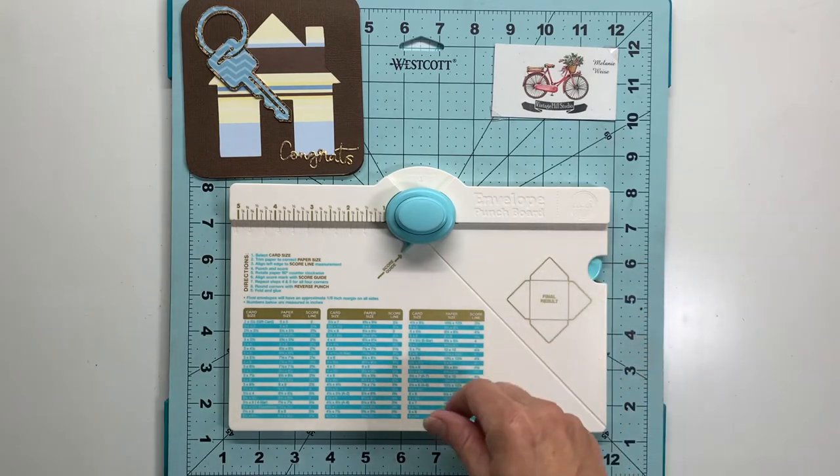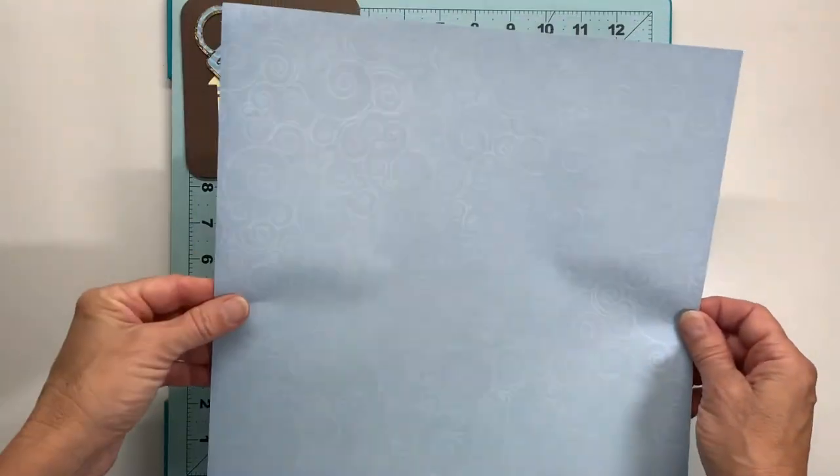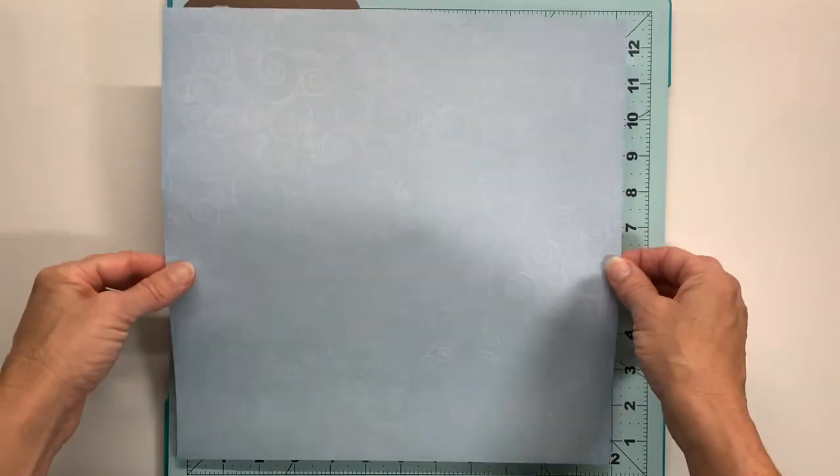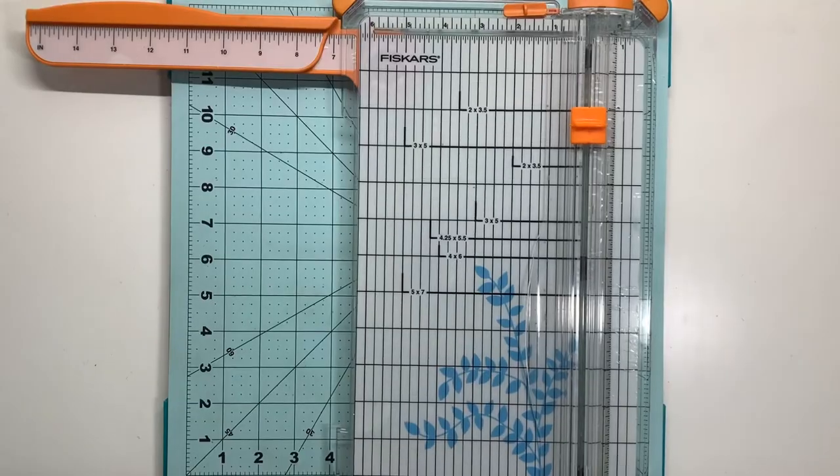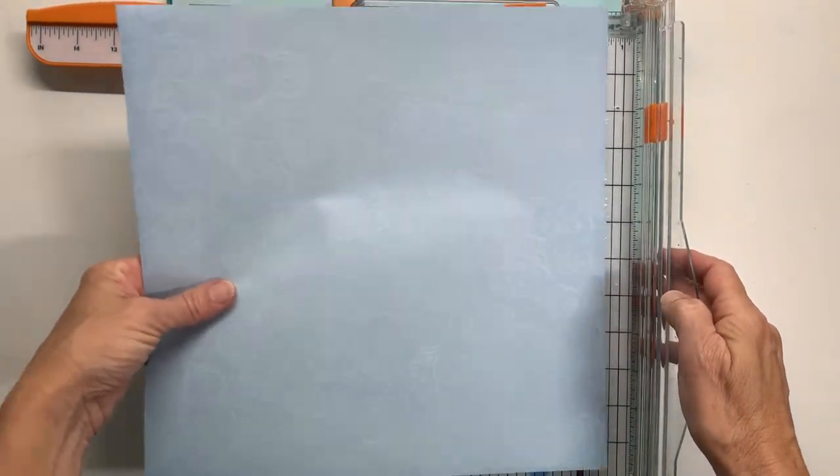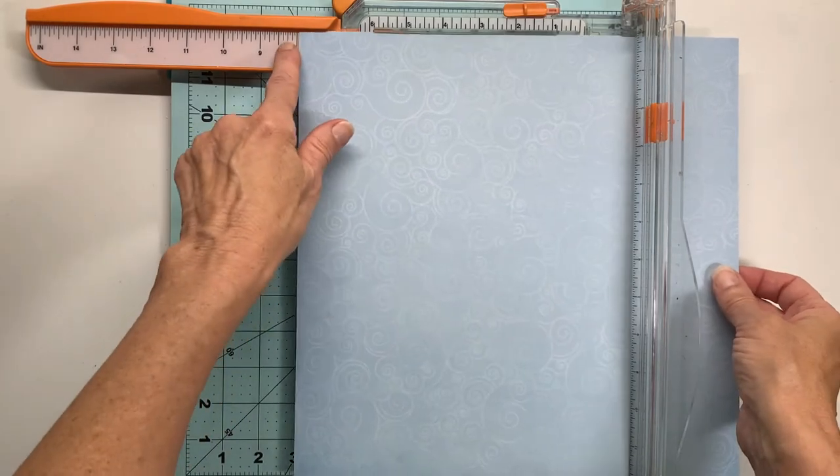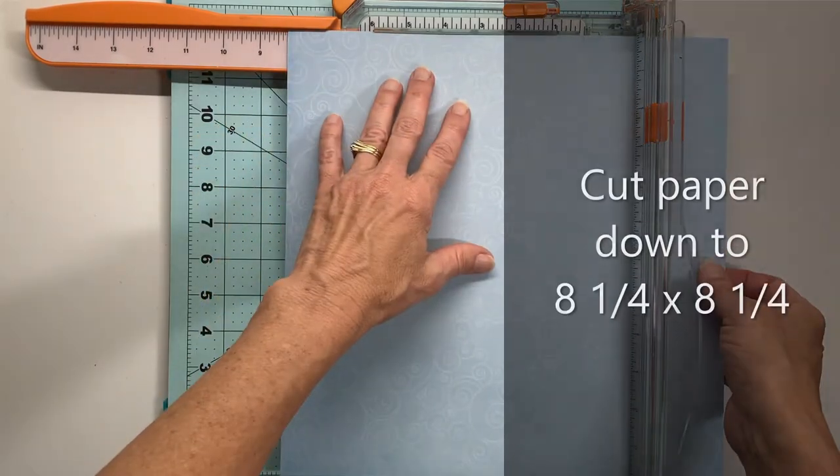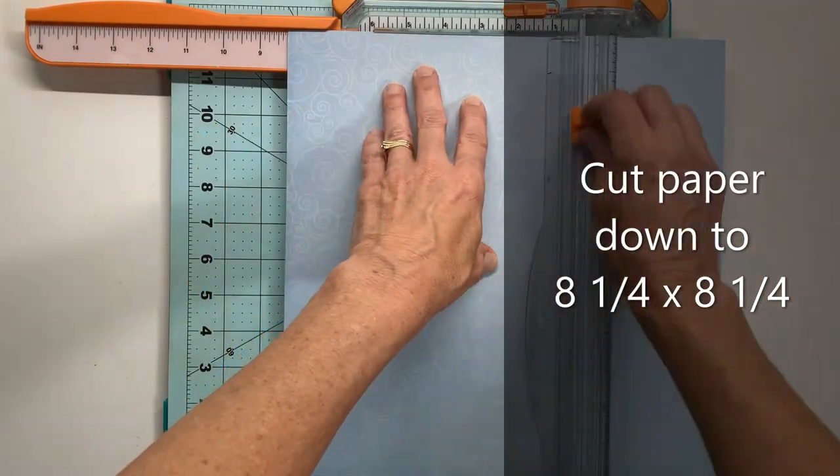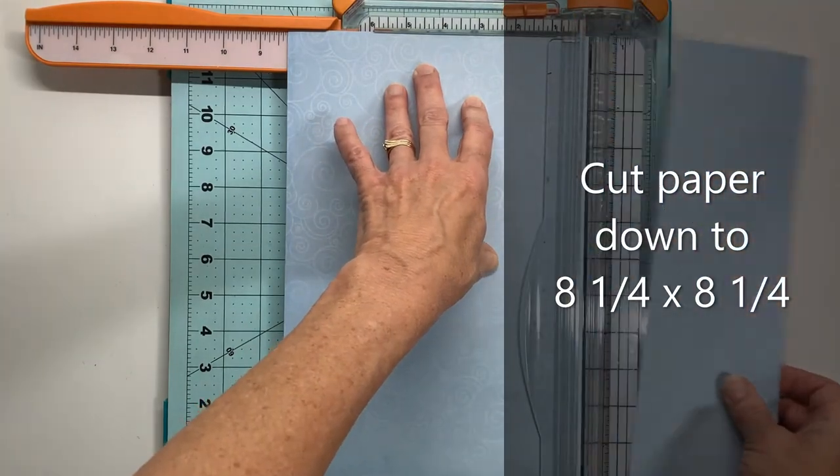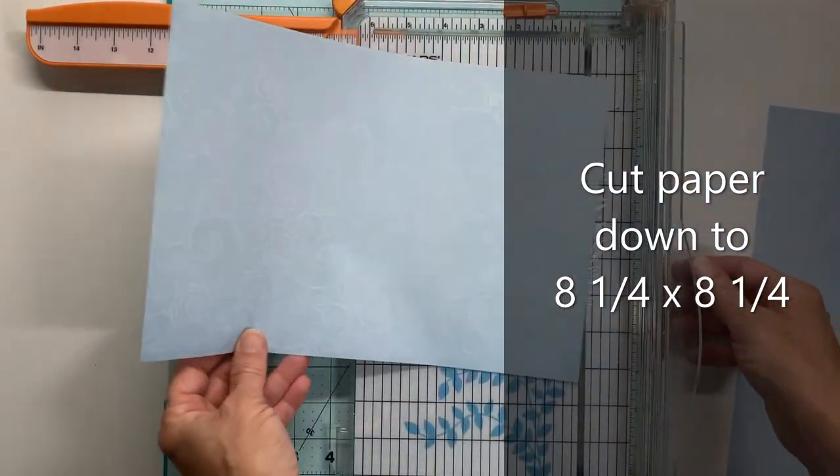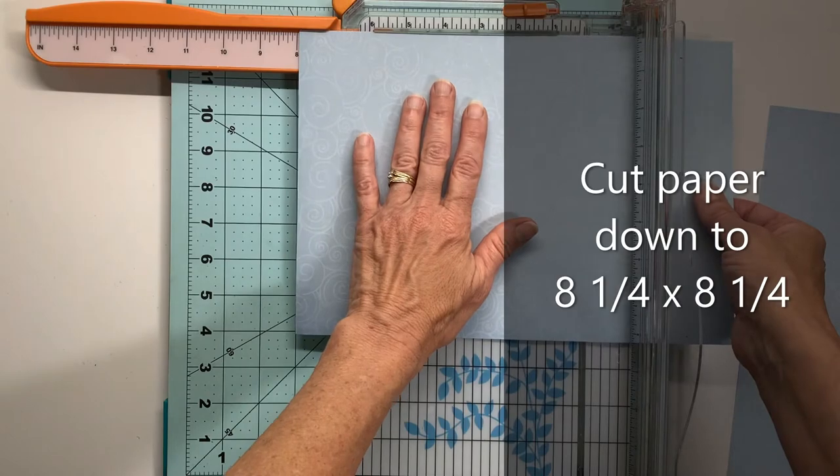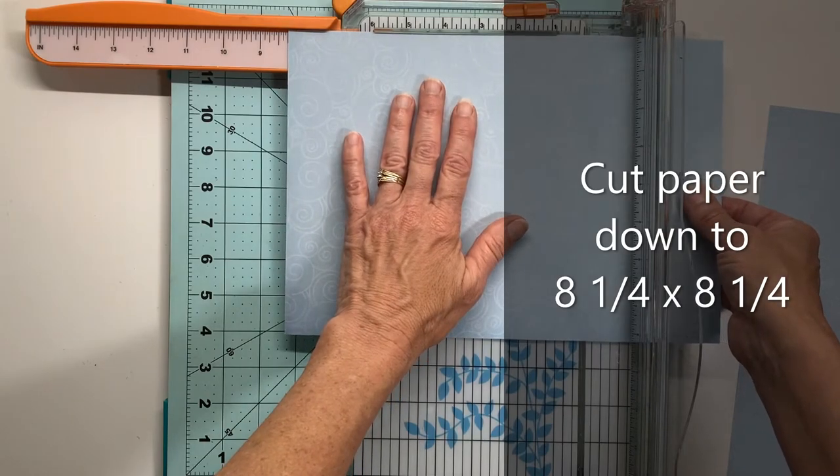Now I use lightweight paper that's got color on one side and white on the other because you don't want your envelopes to be too heavy for mailing purposes. I bring over my paper trimmer and the envelope punch board told me that I need to cut my paper down to eight and a quarter by eight and a quarter inches. So I'll get that done very quickly here.